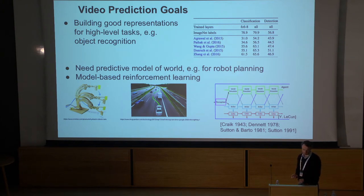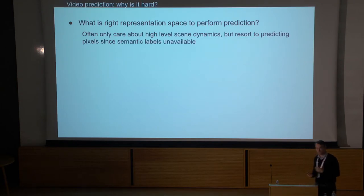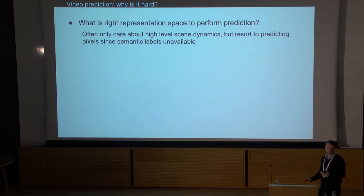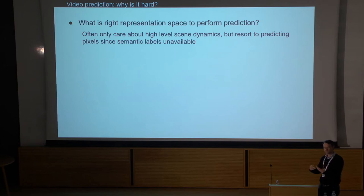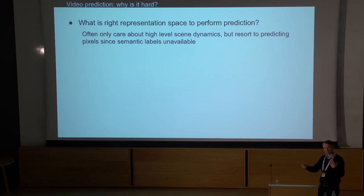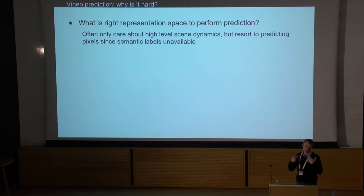Why is this actually a challenging problem? First, what space do you want to make your predictions in? The most natural one is pixels, but when you have pixels you're predicting all these irrelevant details — like the fine texture of the carpet. What we really care about is predicting the high-level dynamics of objects moving around. Those are present in the pixels but not easy to access for the model.